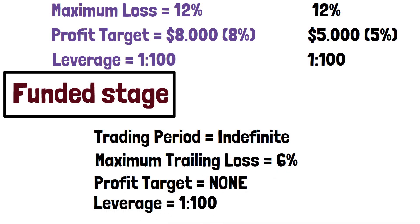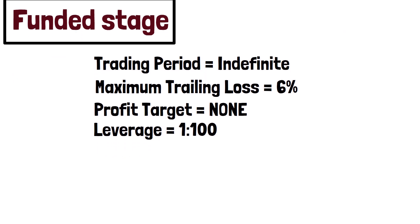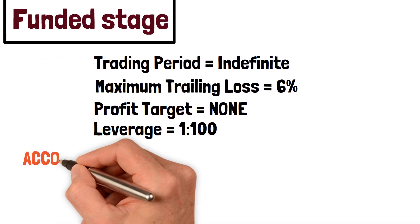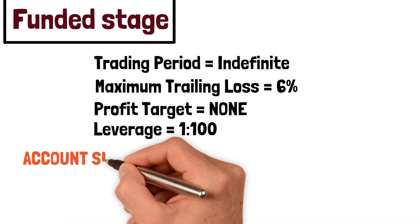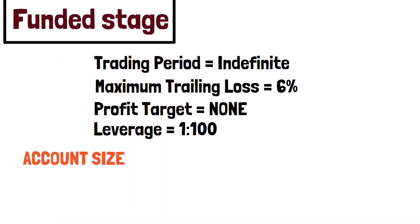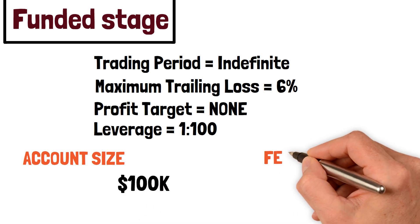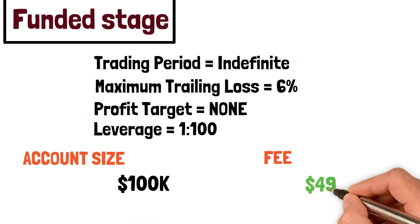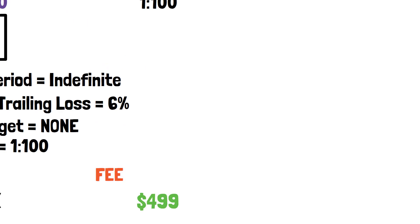In the Algo model, you will not get a fee refund — you will only get the profit split. The only account size available in this model is the $100k account, which costs $4.99.